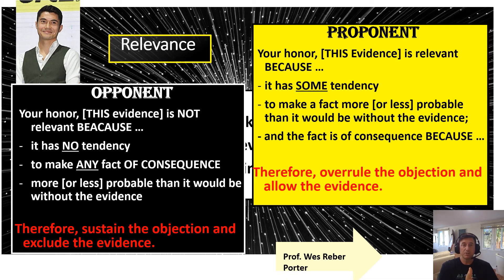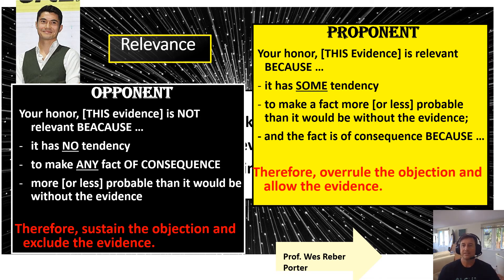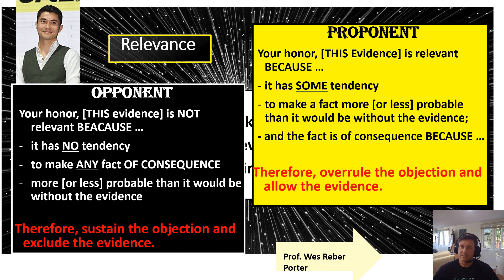The judge then turns to the plaintiff's counsel and says: 'What say you as the opponent? You said irrelevant — you heard his argument.' Their attorney responds: 'Your honor, this evidence is not relevant because it has absolutely no tendency to make any fact of consequence more or less probable than it would be without this evidence. What he's really trying to do is put on all this wealth and make the jury think: oh, he's got plenty of money, he doesn't need the extra money he's suing for. Therefore, sustain the objection and exclude this evidence — let's just talk about what was right and wrong in this land deal and whether Porter owes the crazy rich guy money.'